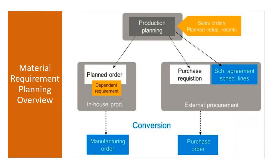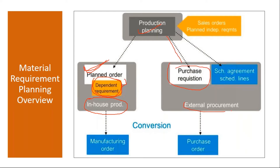Basically, when you run MRP, the system will generate planned orders wherever there is a shortage, provided that material is an internally produced material — like a semi-finished or finished product. For down-level materials, it will generate dependent requirements. And if the material is an externally procured material, it will generate a purchase requisition for external procurement.